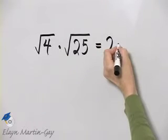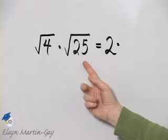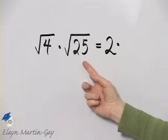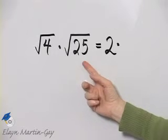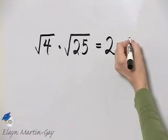And then I have this multiplication sign. What is the square root of 25? I'm looking for a number that, when multiplied by itself, gives an answer of 25. Because 5 times 5 is 25, the square root of 25 is 5.